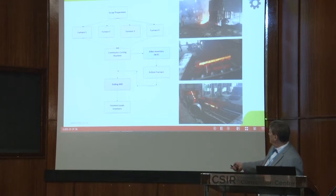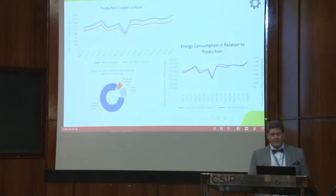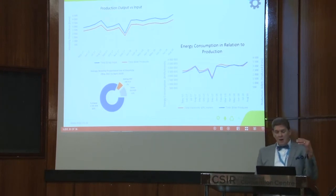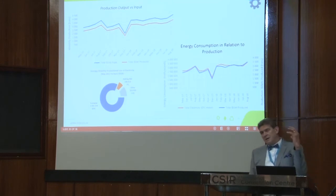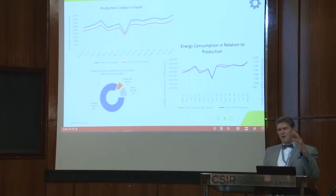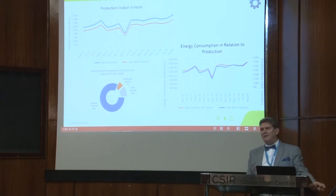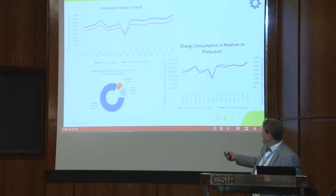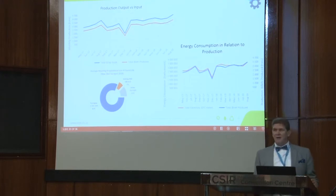When we started to analyse it, the first graph — production versus output — showed scrap coming in versus what goes out. Recall I said melt losses should be around 2% due to oxidation. This plant was showing almost 20%. So there was a huge opportunity: the difference between the blue and yellow trend lines. We then looked at energy consumption in relation to production and could see a clear correlation between electricity consumption and rebar production. That told us we had zeroed in on the driver. In terms of significant energy users, the furnaces were by far the biggest at 82%, with auxiliaries making up the rest.